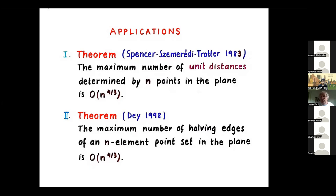The second application, also important for geometric algorithms, also gives an answer of n to the 4/3. The question is: if you have n points in the plane, in how many combinatorially different ways can you cut them into two parts by a line? Two lines are combinatorially equivalent if they have the same points on each side. The answer is n to the 4/3. In both cases we expect the truth is much closer to n — it is conjectured that one can get a bound of n to the 1 plus epsilon.